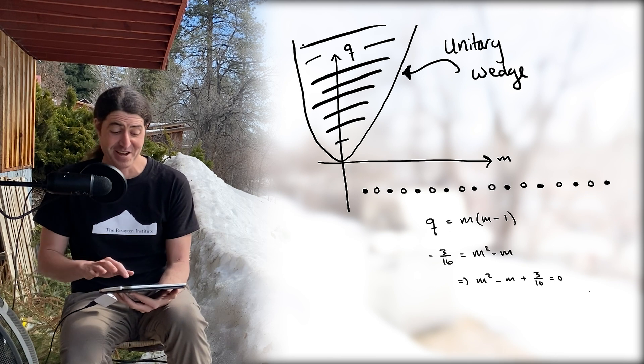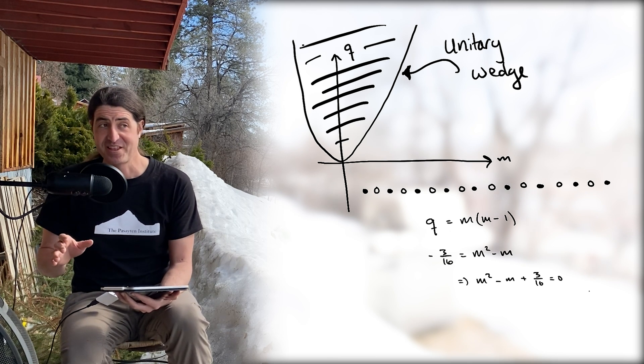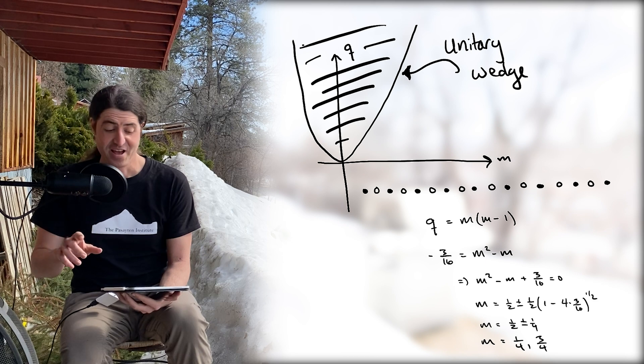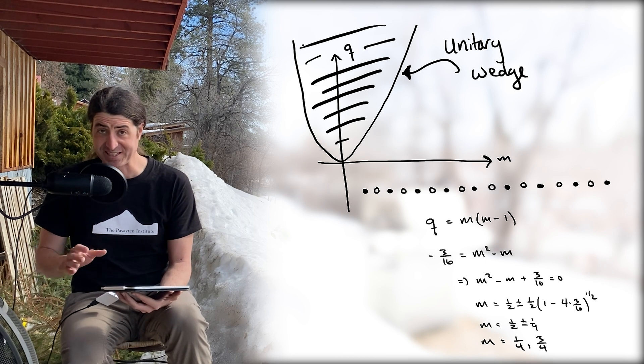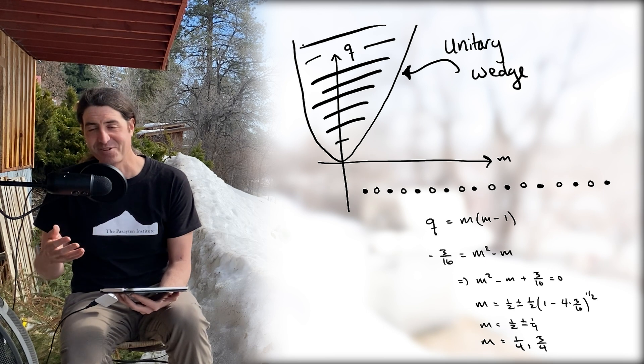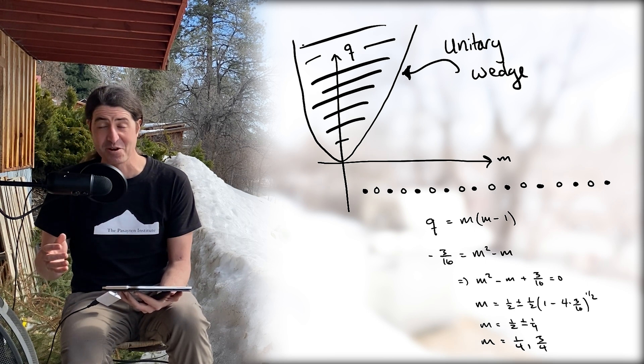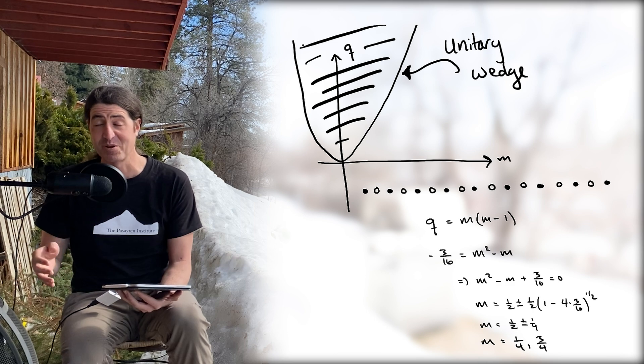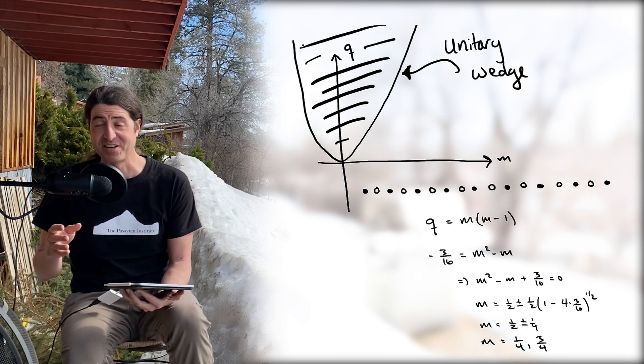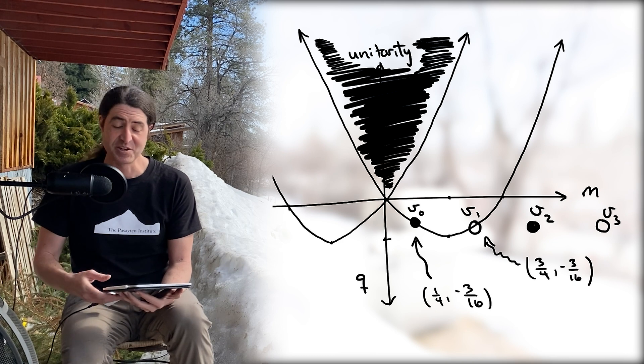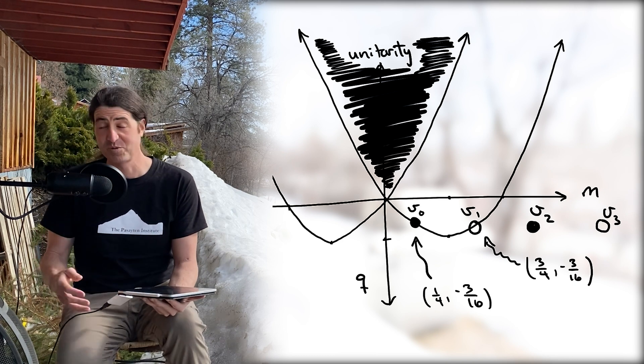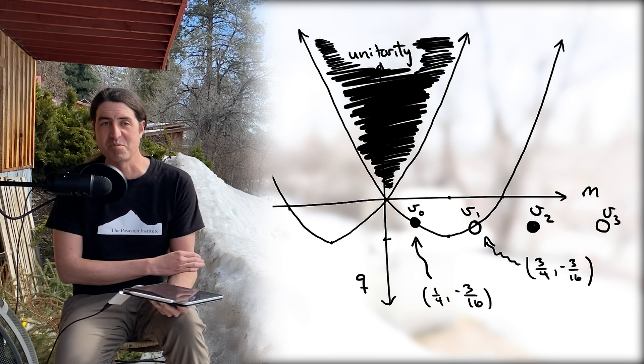Lo and behold, what do we find? We find that the two values of m allowed on the parabola where Q is equal to minus three sixteenths is given by one fourth and three fourths, which are precisely the lowest weights of the two lowest weight states of our even and odd dimensional modules respectively. They're on the parabola.